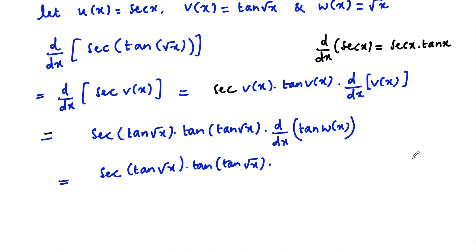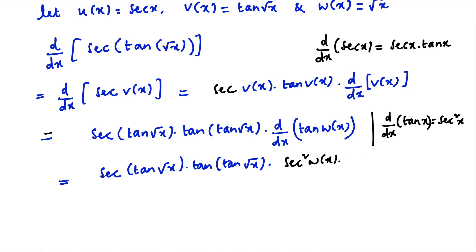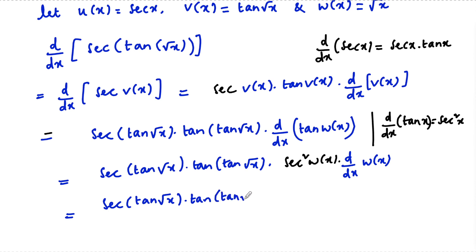Again, the differentiation of tan(root x) uses the fact that d/dx of tan x = secant squared x. So we can write the differentiation of tan(w) as secant squared(w) into d/dx of w(x). This gives us secant(tan(root x)) into tan(tan(root x)) into secant squared(root x) into d/dx of w(x), which is root x.